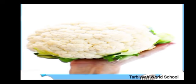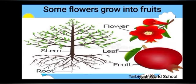You can see the root, stem, flower, leaf and fruit. Which flower is this? This is a flower of pomegranate. Flowers of some plants such as broccoli and cauliflower are also used.